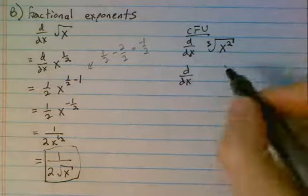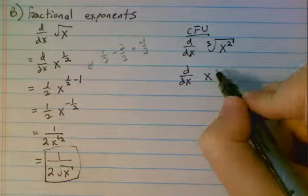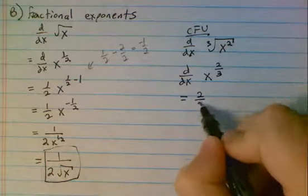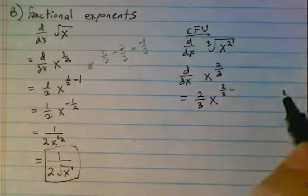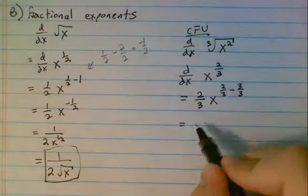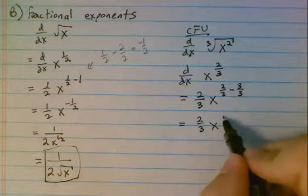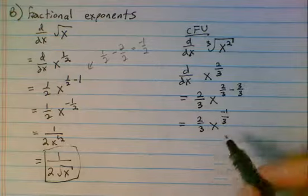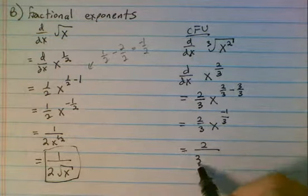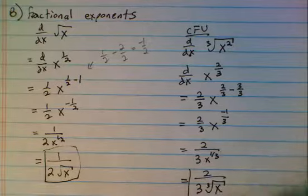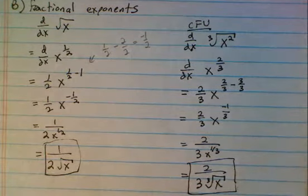Before we take the derivative, we're going to rewrite this. This is the same as taking the derivative of x to the 2 thirds. When we do that, we're going to bring down the 2 thirds and subtract 1 from the exponent. We can write that 1 as 3 thirds. Common denominator is 3 — 2 minus 3 is negative 1. Now that negative exponent moves to the denominator. We've got 2 over 3 times the cubed root of x.